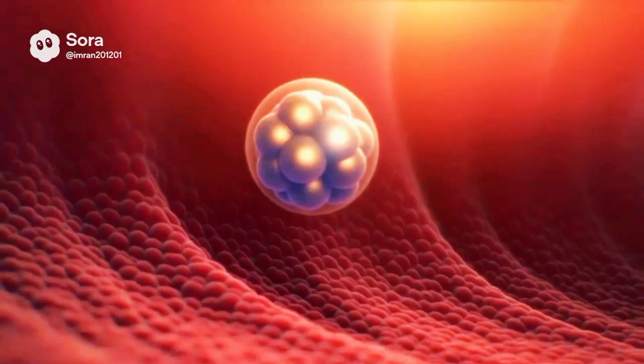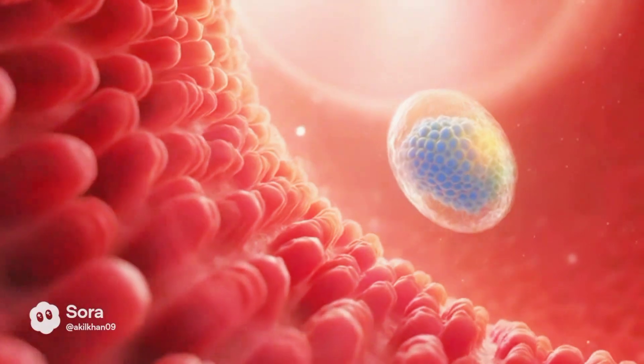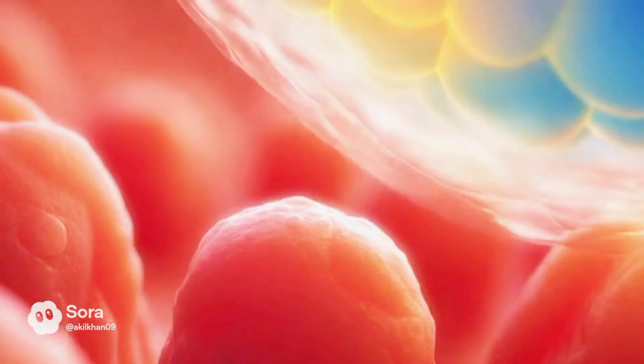Now called a zygote, the single cell drifts through the fallopian tube. About a week after fertilization, the journey pauses here.